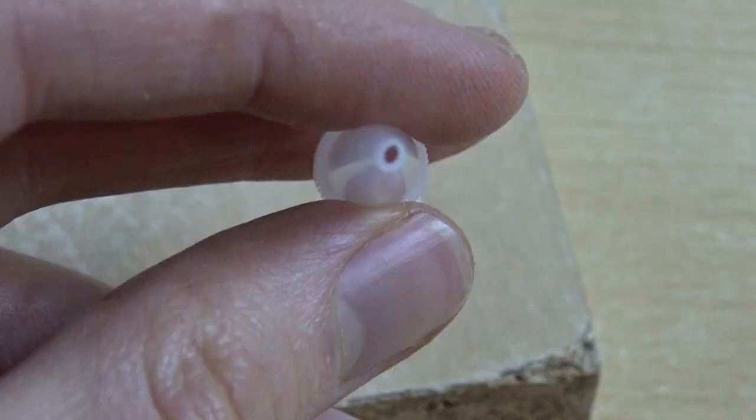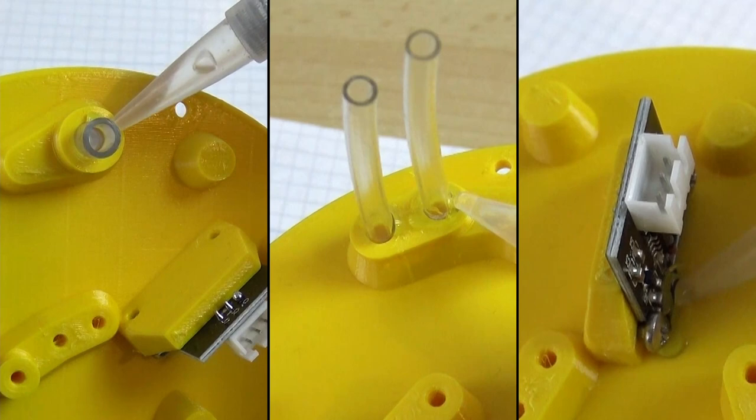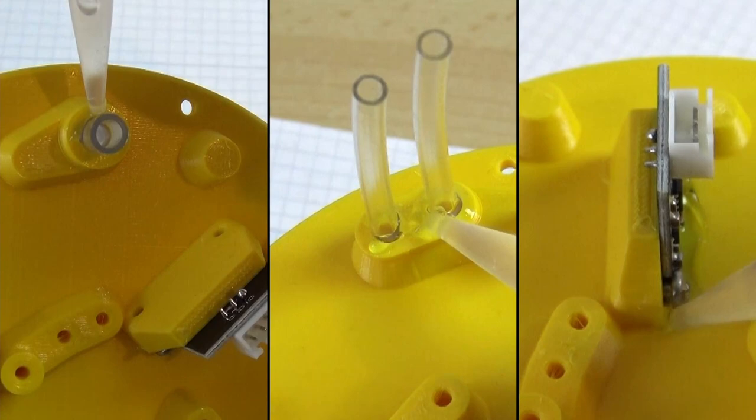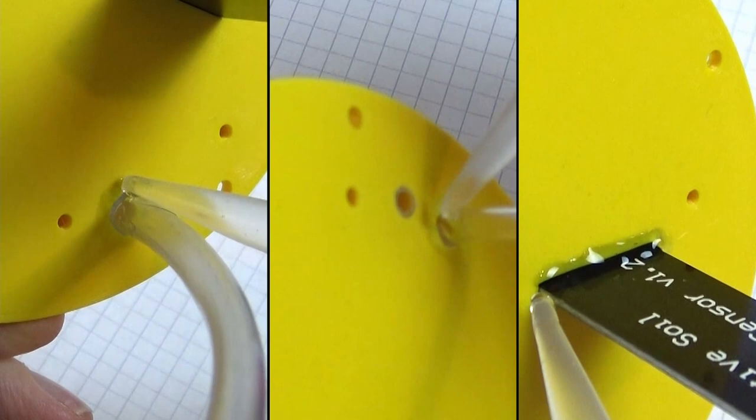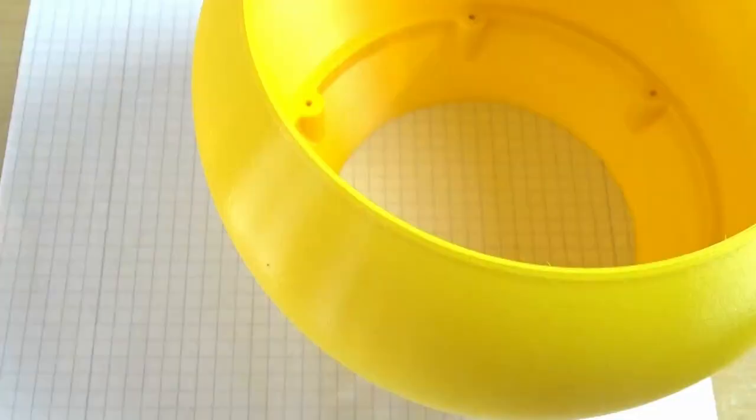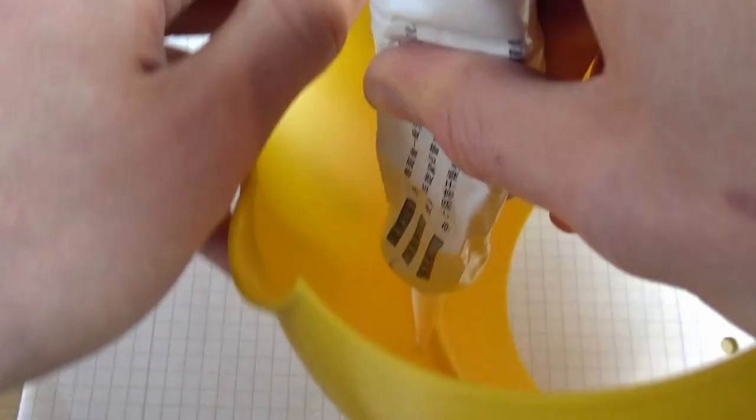Now it's time for our silicone sealant. If yours came with a tip like this, you are in luck as it will make it much easier and more precise to use. Cut off the top of the tip to create a small outlet hole like this. Use it on all the spots where the hoses come out of the holes and the gap between the soil moisture sensor and the 3D printed part.